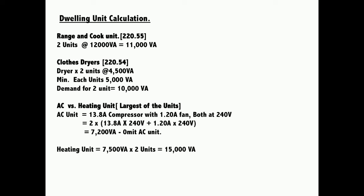The next load to take into account is the range and cook unit. In this question we have a range of 12,000 VA, but that's just for one floor, so we need two units to account for. Two units at 12,000 VA, according to Article 220.55, would leave us with 11,000 VA demand for the entire range load.